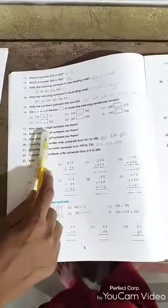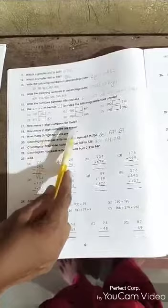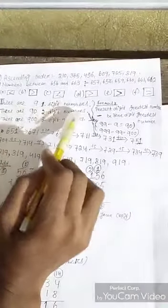How many one-digit numbers are there? One-digit numbers: there are 9. How many two-digit numbers are there? I will show you the formula. There are 90 two-digit numbers. This is the formula.